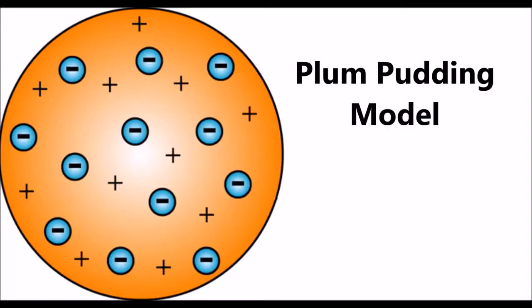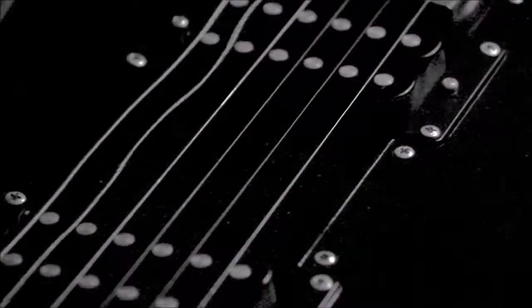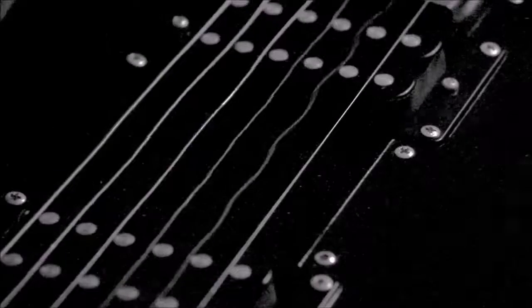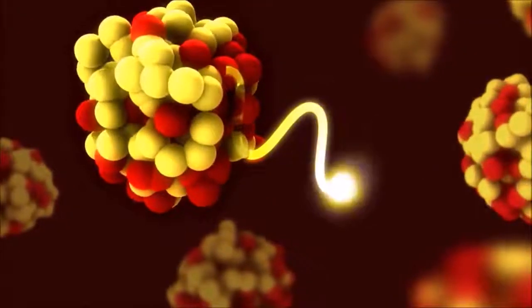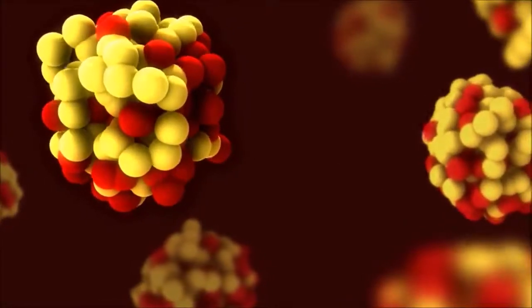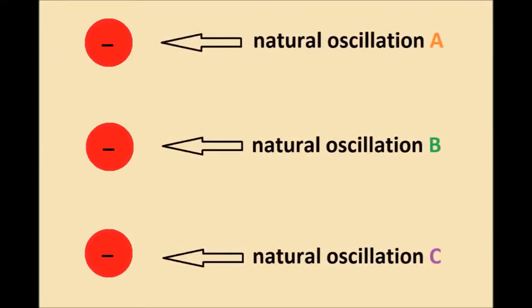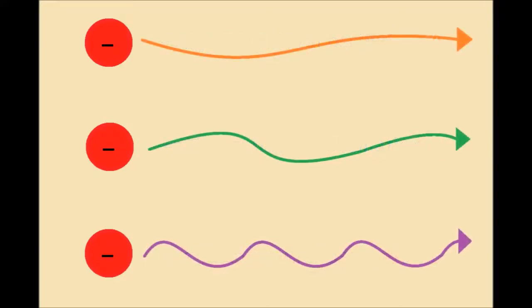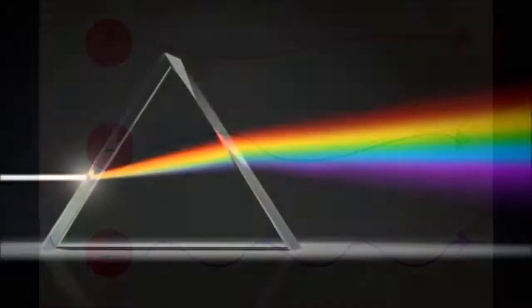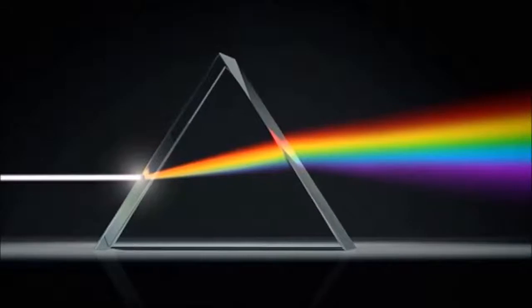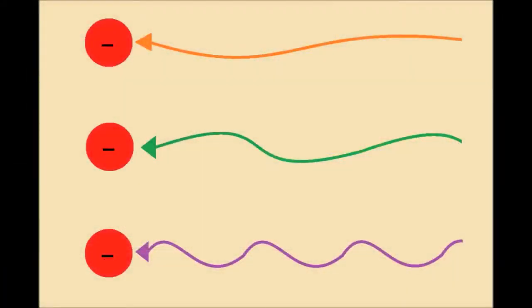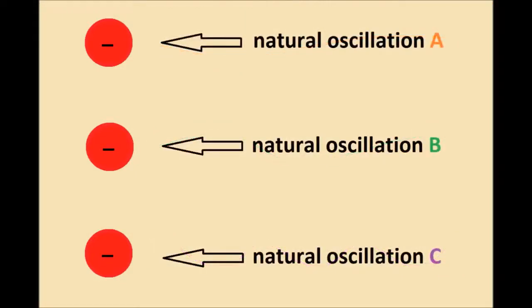This model had tremendous appeal because it was able to account for atomic spectra. If the atom collided with another atom, it would be like plucking the strings of a guitar. The strings start vibrating, and in doing so transfer energy to the air in the form of sound waves. Each string vibrates with a different frequency. When an electron starts shaking, because it has charge, it releases light instead of sound waves, and that light has the frequency that the electron is shaking with. Thompson believed that each electron in an element could shake with only specific unique frequencies, which he called natural oscillations, and so could release only specific frequencies of light. This would explain emission spectra. If an atom were illuminated with light of many frequencies, each electron would selectively absorb only light whose frequency matched that of the electron's natural oscillation. This would explain absorption spectra.